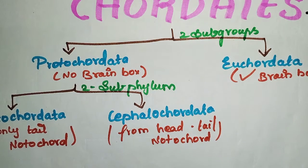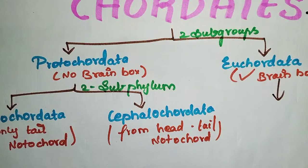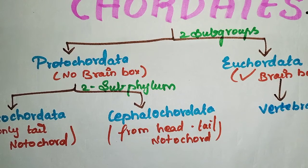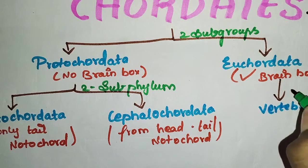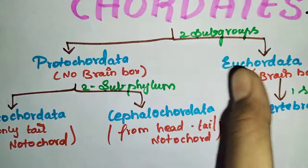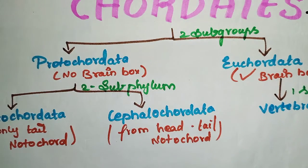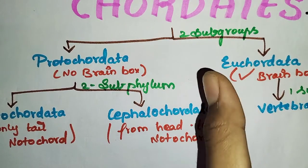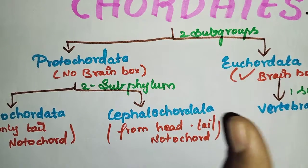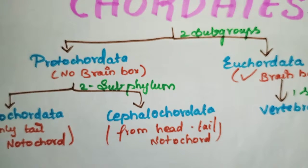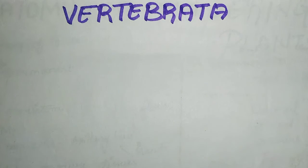Eu-chordata has only one subphylum: Vertebrates. So, Chordata has two subgroups — Proto-chordata and Eu-chordata. Proto-chordata is divided into two subphyla: Urochordata and Cephalochordata. Eu-chordata has only one subphylum, which is Vertebrates. Now we will break down Vertebrates further.